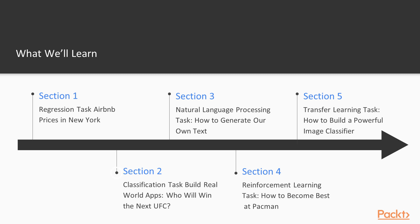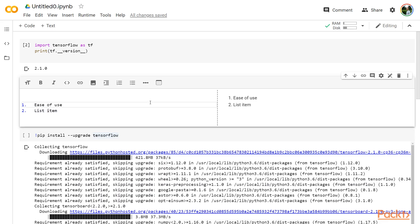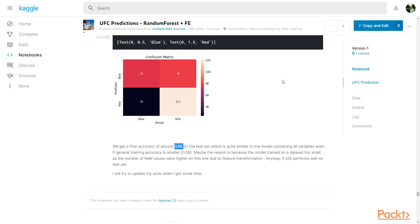Section 2 will have us tackle a slightly more complex task. UFC, or the Ultimate Fighting Championship, has grown tremendously fast in the last few years, being the largest promotion of its kind, and everyone from bookmakers to fighters to fans would stand to gain something if we could get some computer-aided insights into the upcoming fights. We will show how we can do that with machine learning in general and TensorFlow in particular.